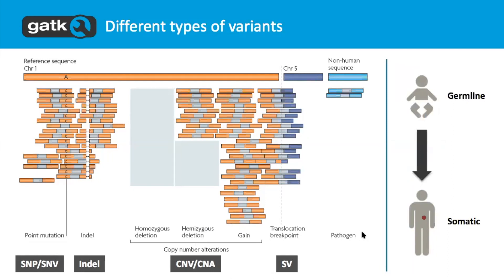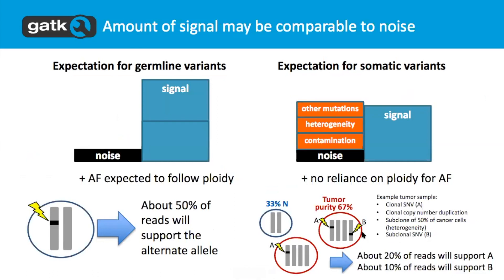So let's focus on the short variants to start with. Andre is going to tell us how we deal with the fact that we now have lower signal that we're looking for, and we have much higher problems in terms of noise, contamination, heterogeneity, and other mutations that are complicating the picture. I'm going to stop here with this intro presentation — I just wanted to remind you of the particular challenges we're dealing with in the somatic context. And Andre is going to explain how we can identify these mutations with high sensitivity and precision.